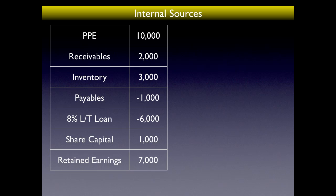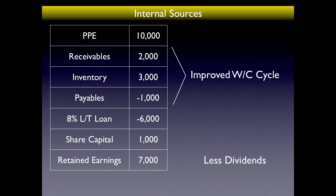So where can we get money from in order to invest? One place is working capital — current assets less current liabilities. If we improve how quickly receivables pay us, how quickly we move stock, and lengthen the time it takes to pay payables, this will free up cash. An improved working capital cycle frees up cash to finance investment in positive NPV projects.